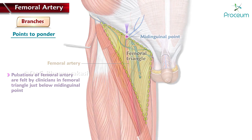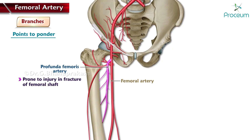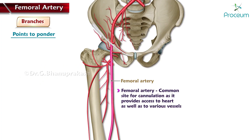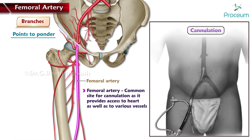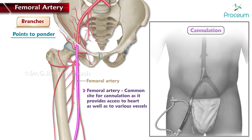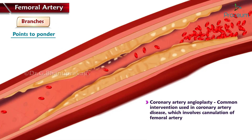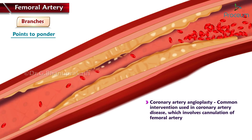The profunda femoris artery is prone to injury in fracture of the femoral shaft. The femoral artery is a common site for cannulation as it provides access to the heart as well as to various vessels. Coronary artery angioplasty is a common intervention used in coronary artery disease, which involves cannulation of the femoral artery.